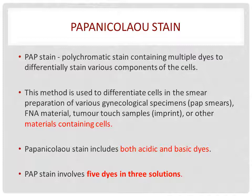Let's learn about the staining that can be performed after preparation of respiratory tract cytology slides. The Papanicolaou stain, or Pap stain, is a polychromatic stain containing multiple dyes to differentially stain various components of the cell. It can be used to differentiate cells in smear preparations from various specimens, including gynecological specimens, FNA materials, tumor touch samples, or other materials containing cells.